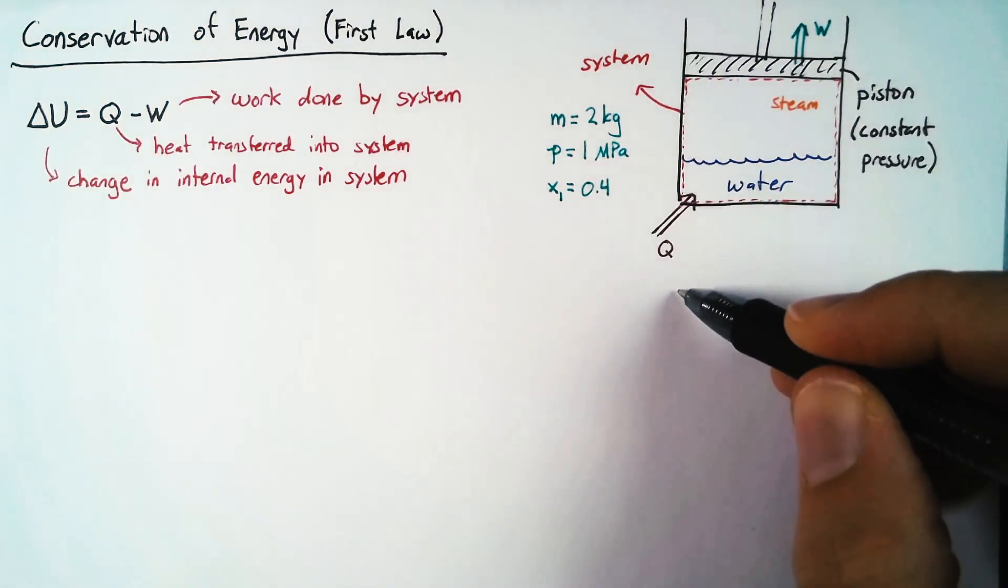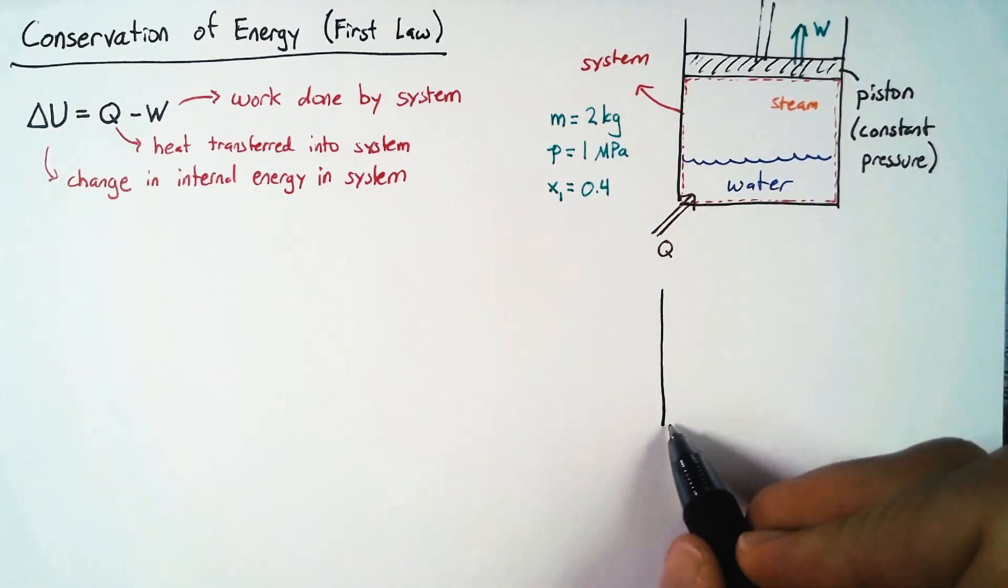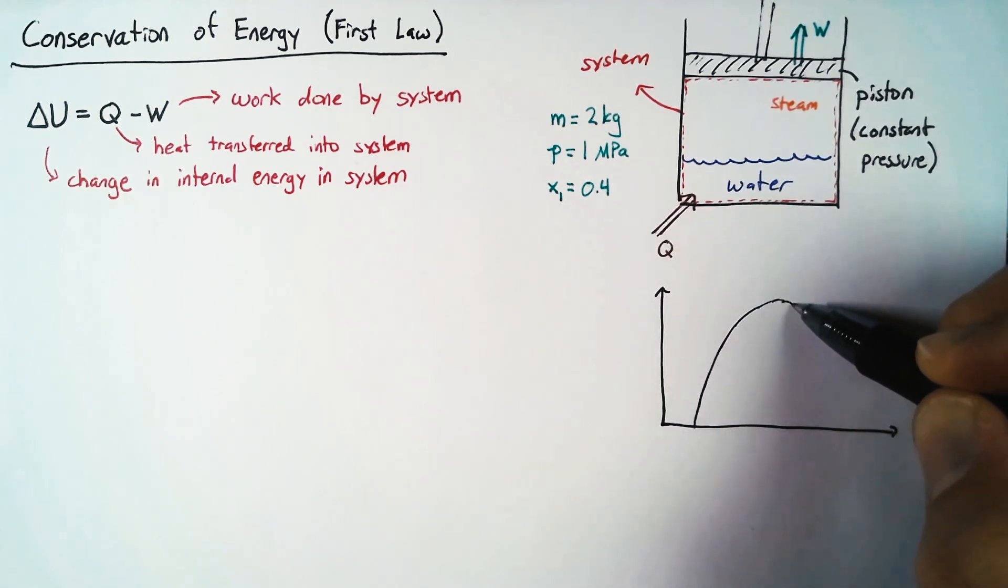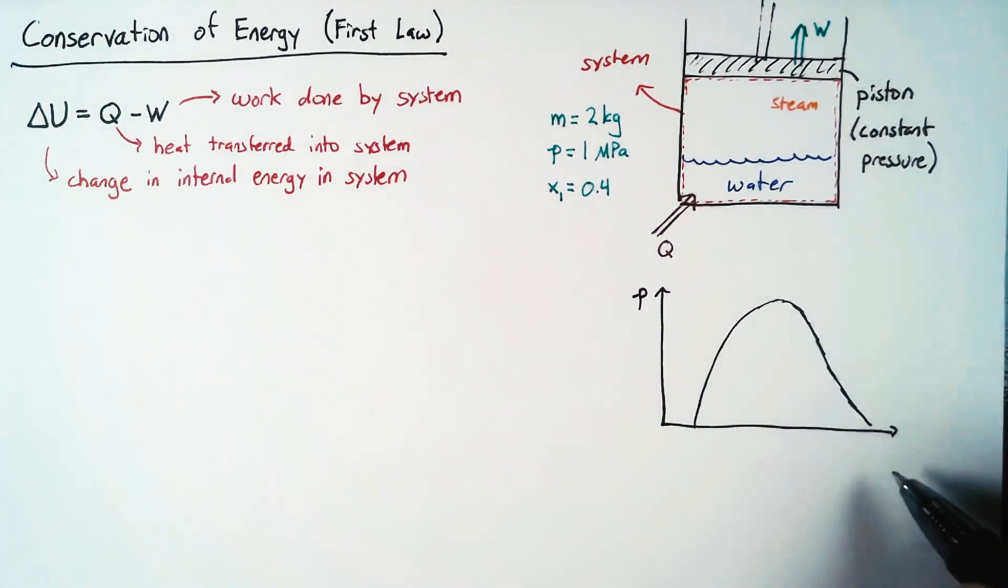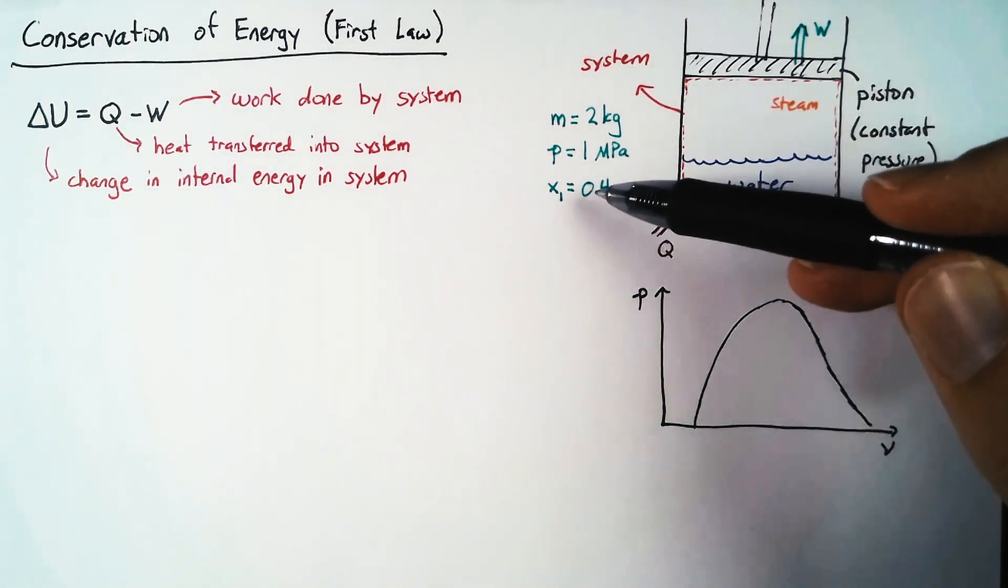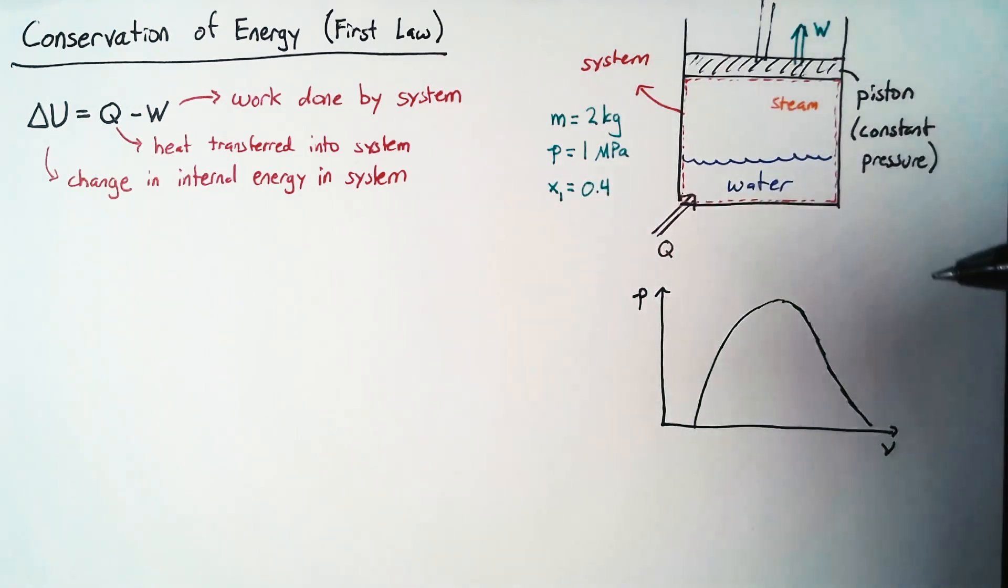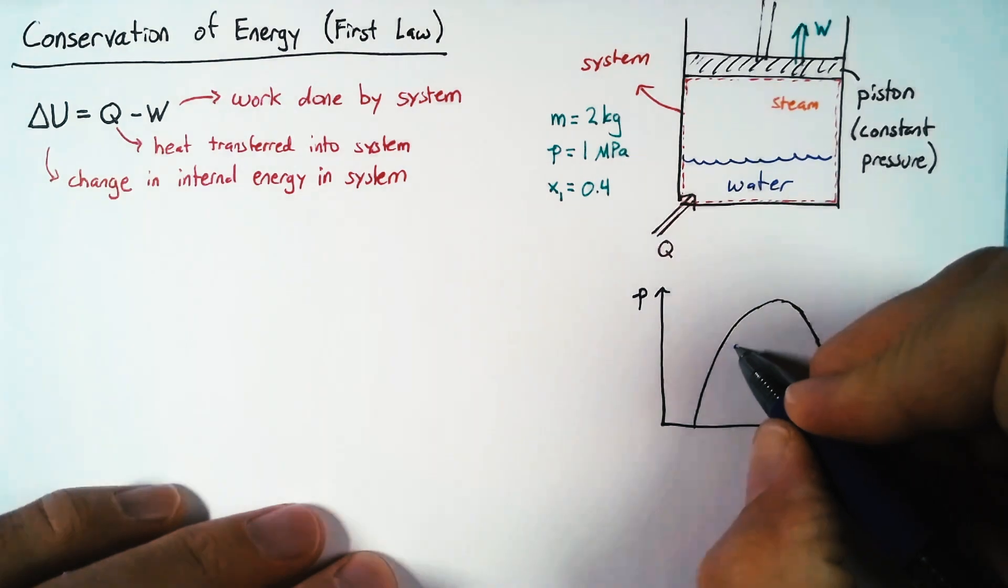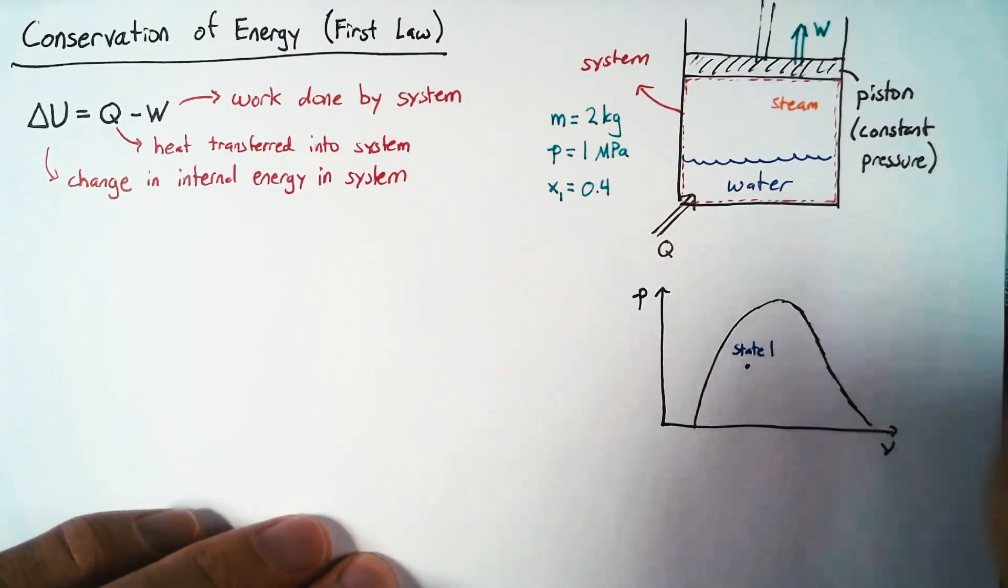Now, if we were to plot this on a steam PV diagram, we know that there is a curve that defines the vapor envelope. And our first point here is going to start inside that curve. So let's define our state 1 like so.